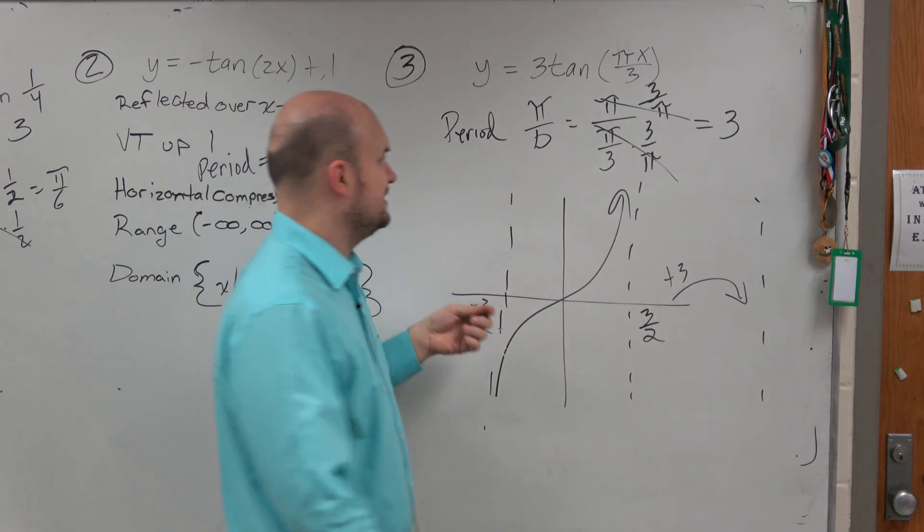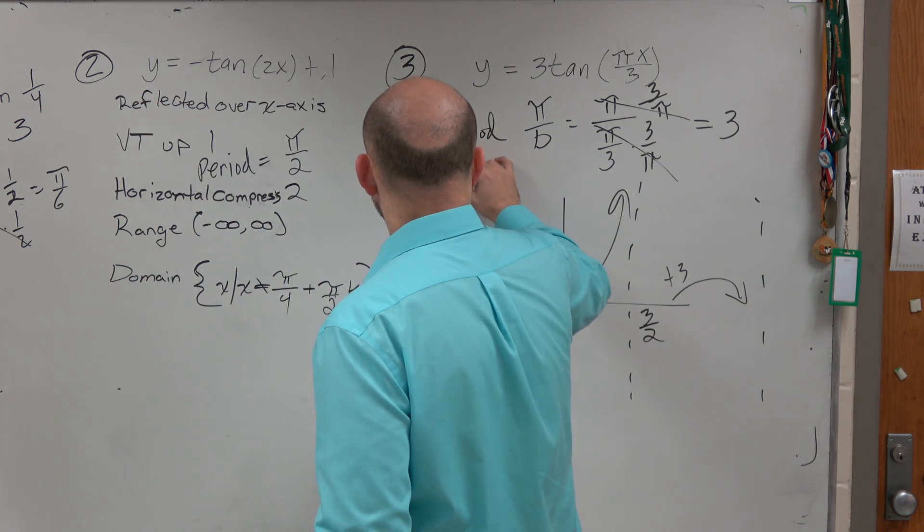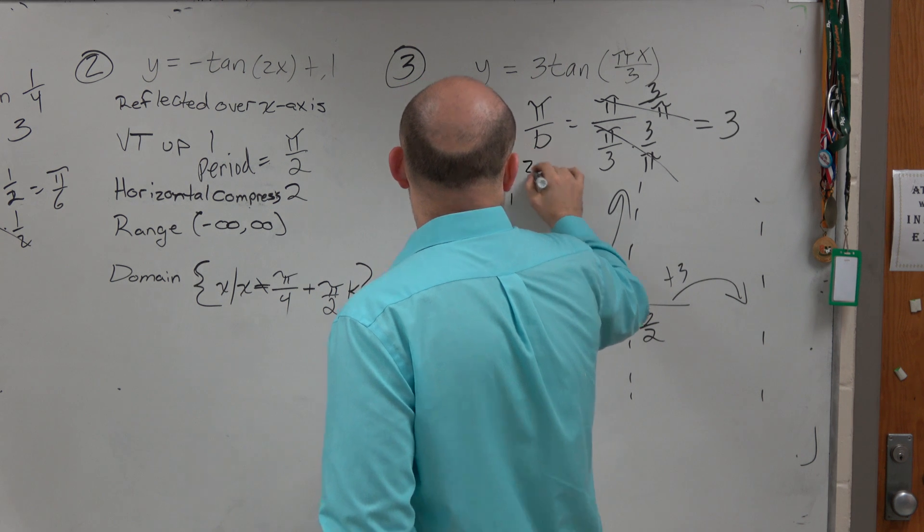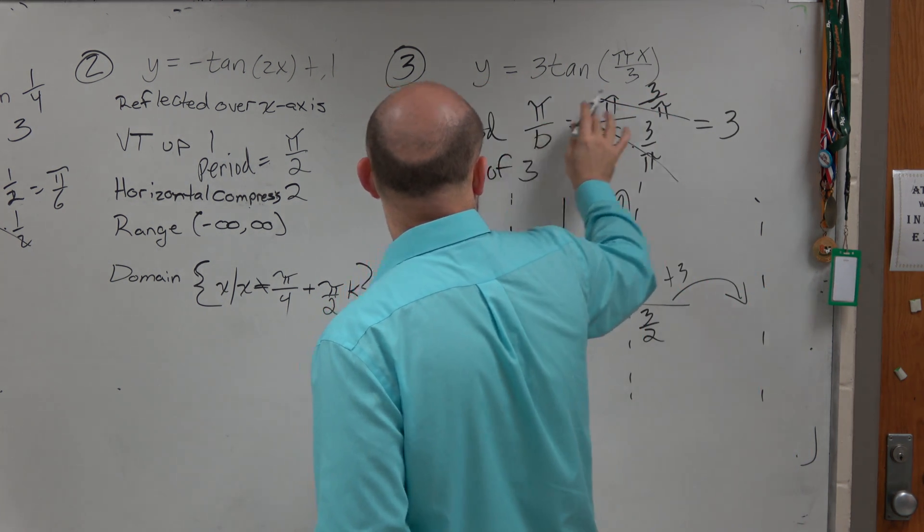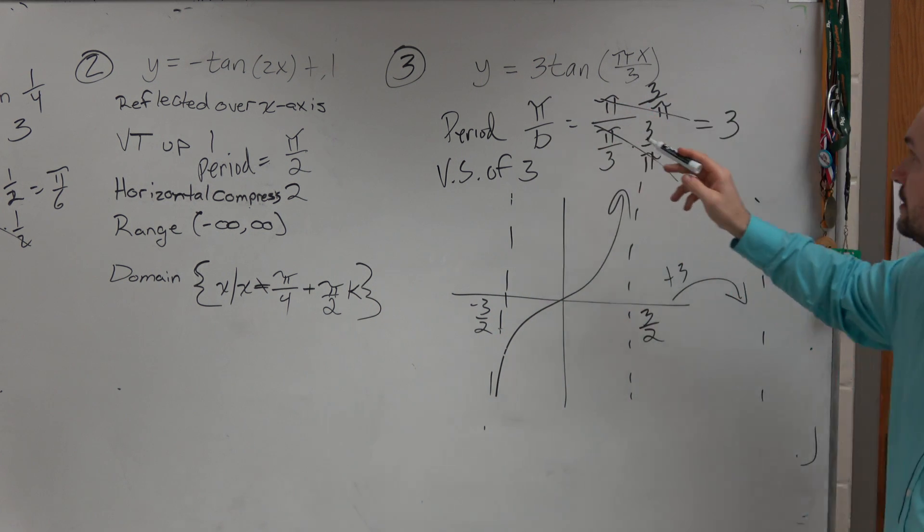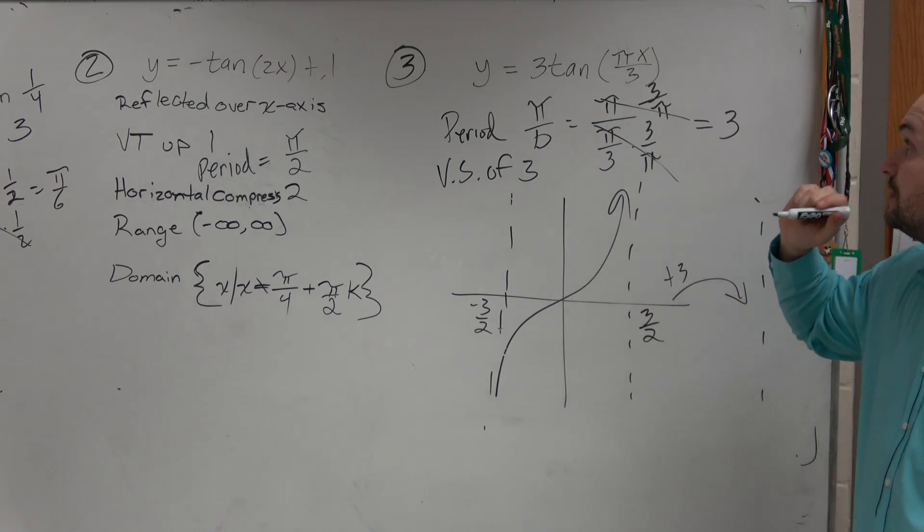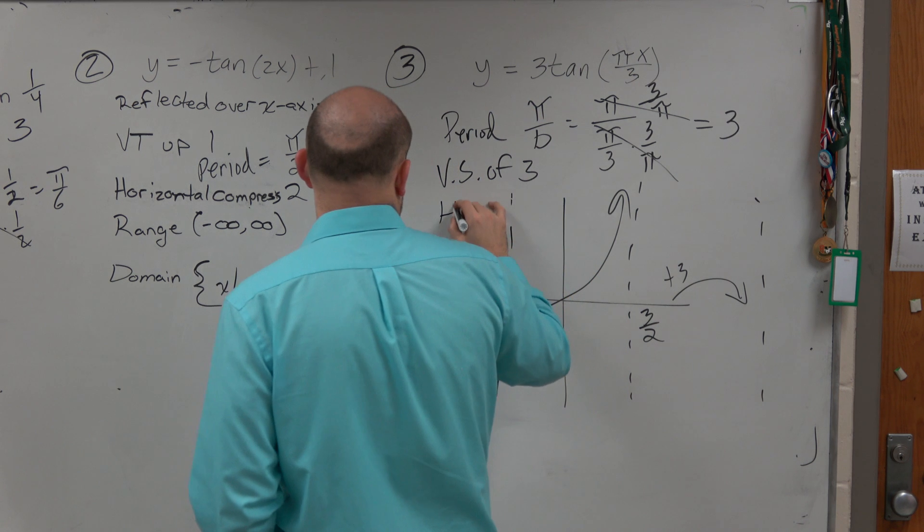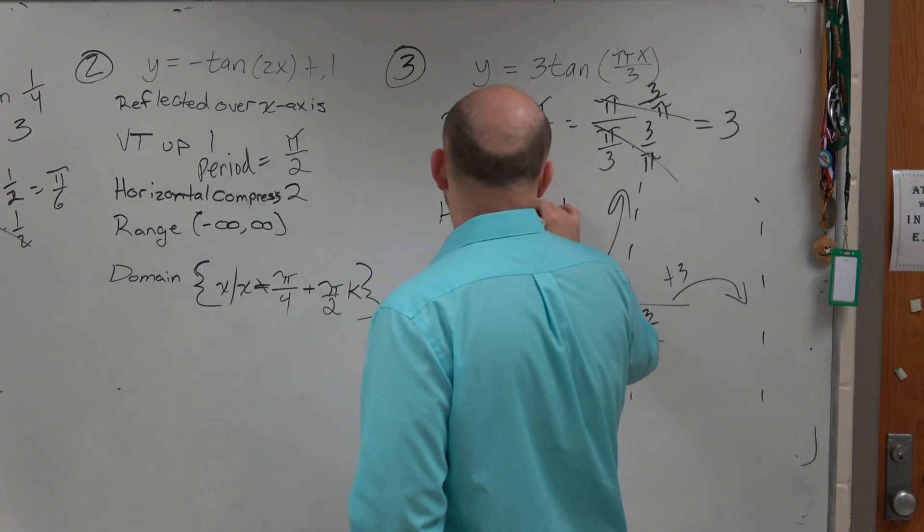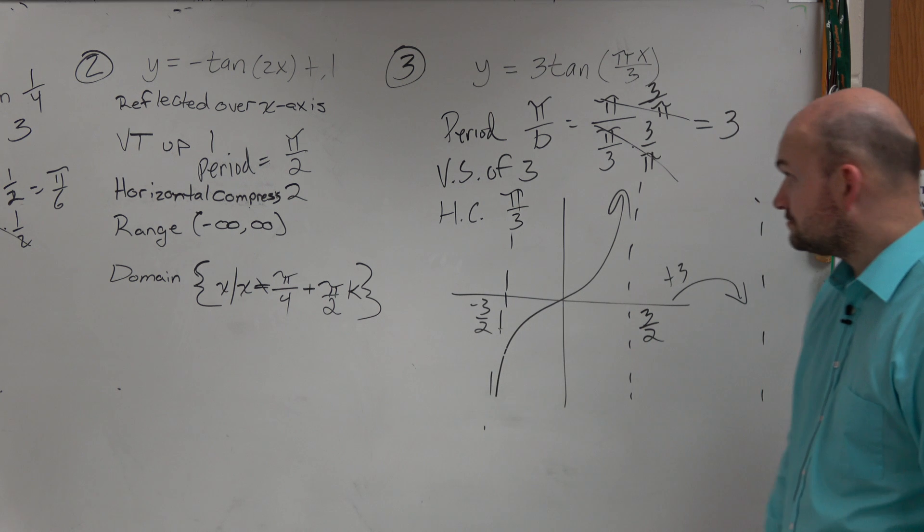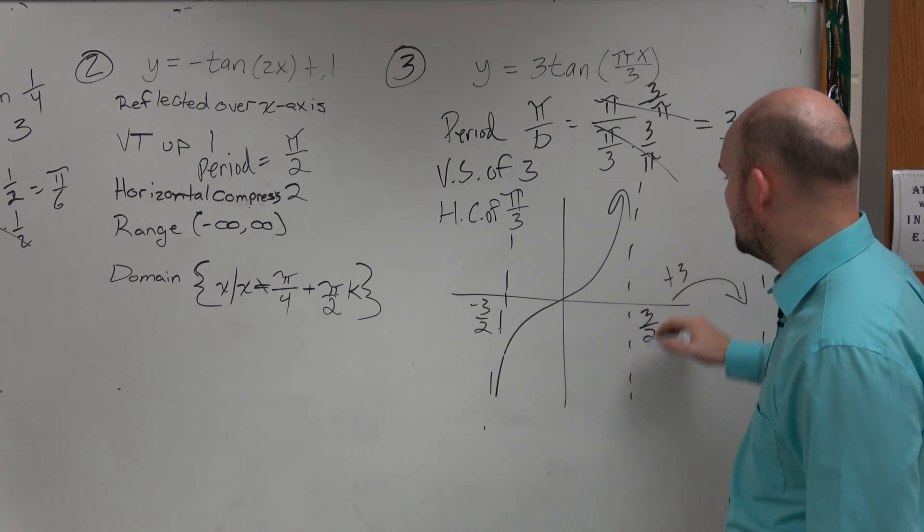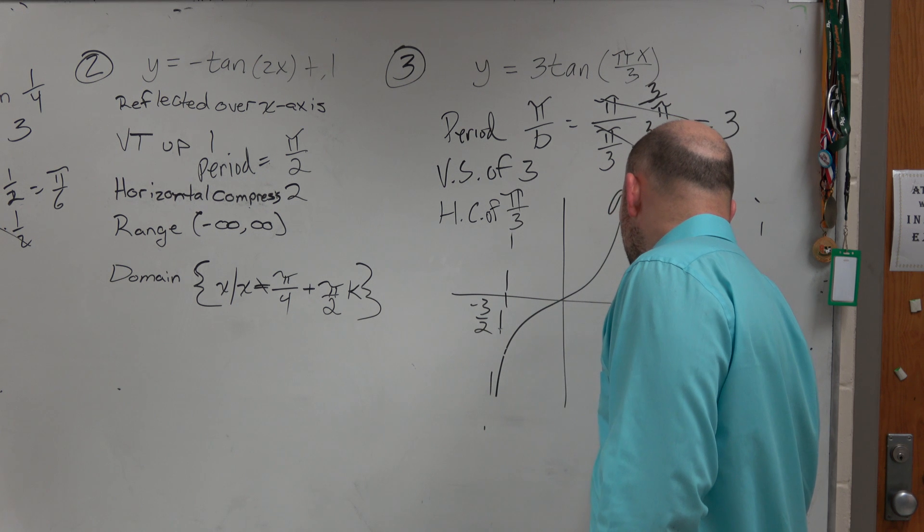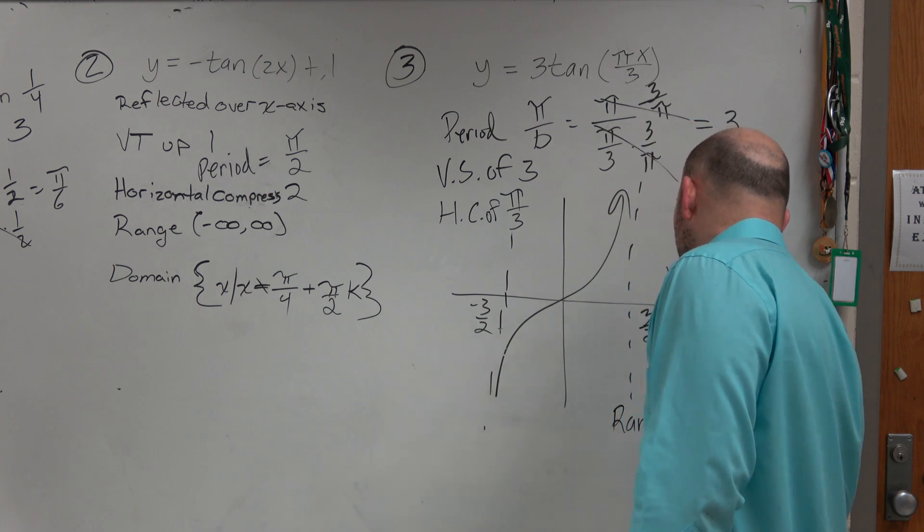The next thing you want to do is identify the transformation. We could say there's a vertical stretch of 3, there is the horizontal compression of π thirds. And then let's go and figure out the range is rather simple. That's from negative infinity to infinity.